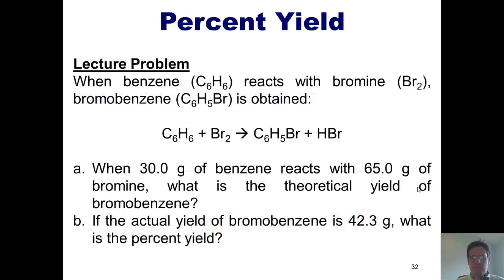Let's take a look at one. Back to our example, bromobenzene and benzene. Question A: when 30 grams of benzene react with 65 grams of bromine, is that different? Yeah, it is. Because in the previous example, I said you're reacting 30 grams of benzene with excess bromine. In this particular example, I'm not telling you who's in excess. You have to figure it out. What's the theoretical yield of bromobenzene?